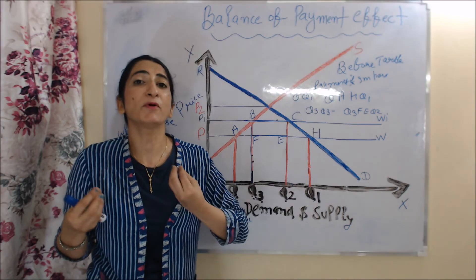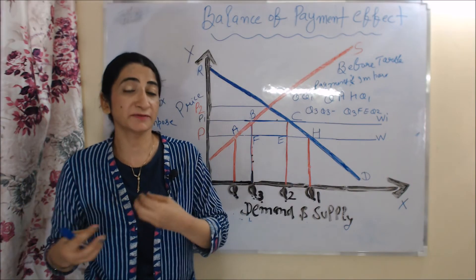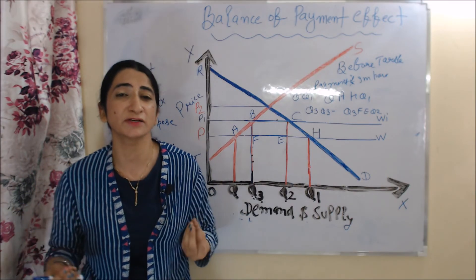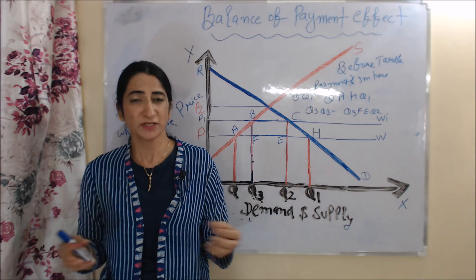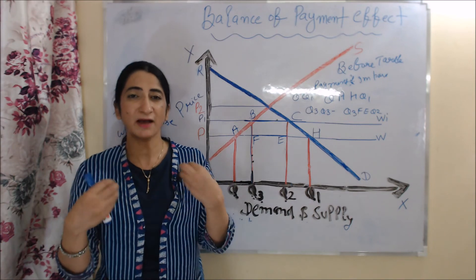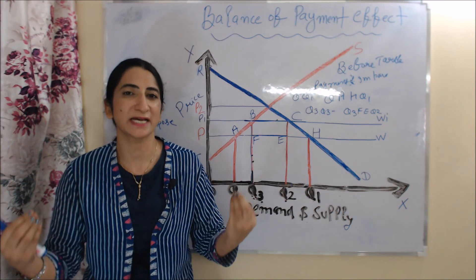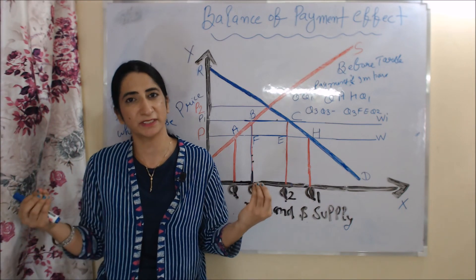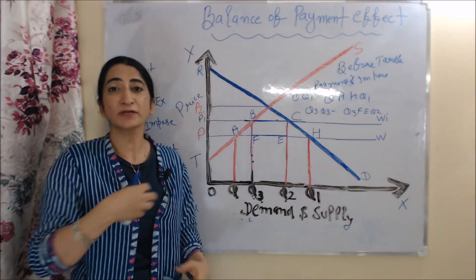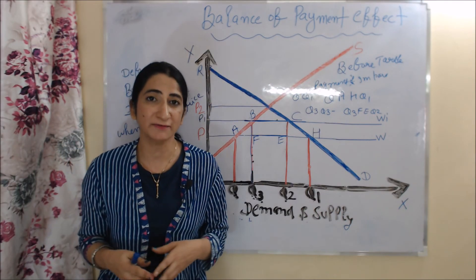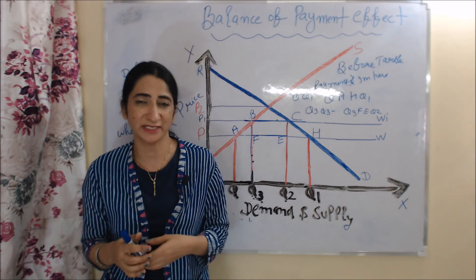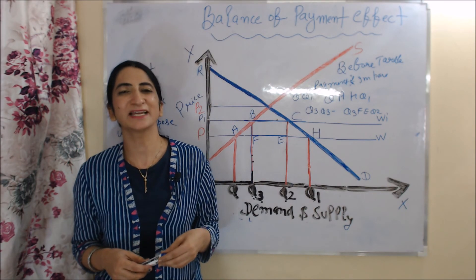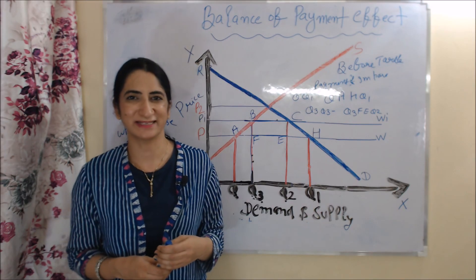Less payment means our imports are reducing. If imports are reducing, the deficit of balance of payment is reducing. So we can say that after imposing tariff, our deficit of balance of payment falls. This is all about the effects of tariff under partial equilibrium. Thank you so much for watching this video.